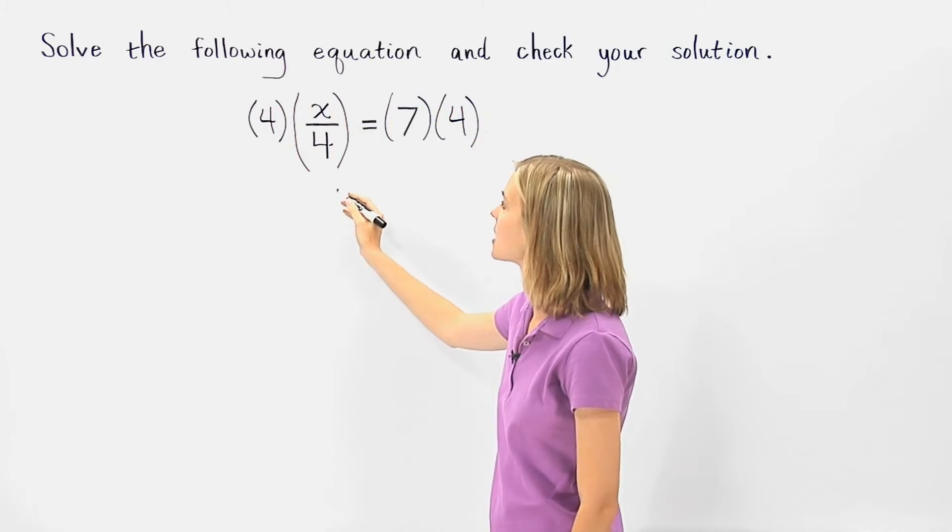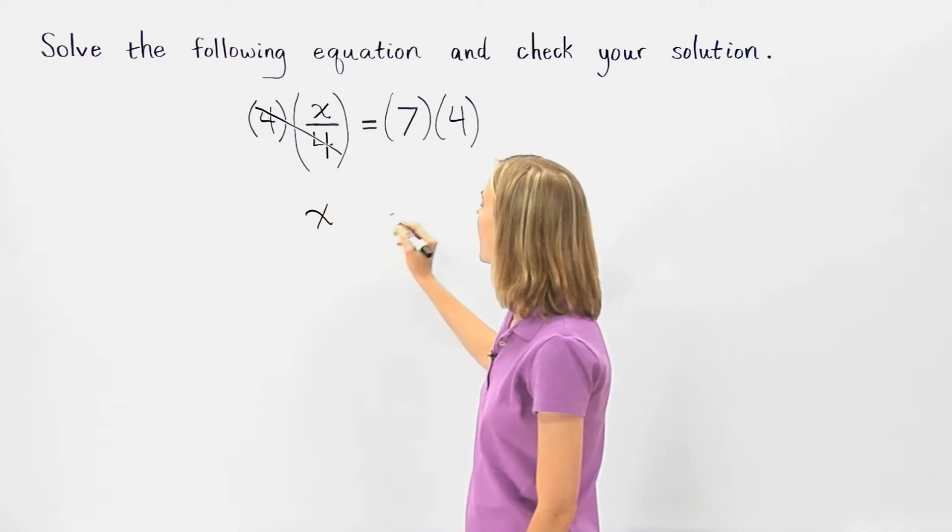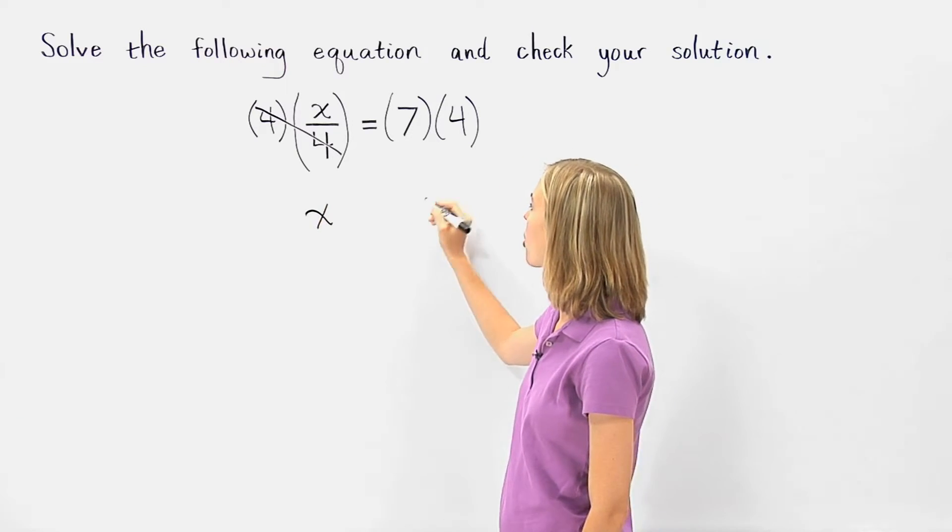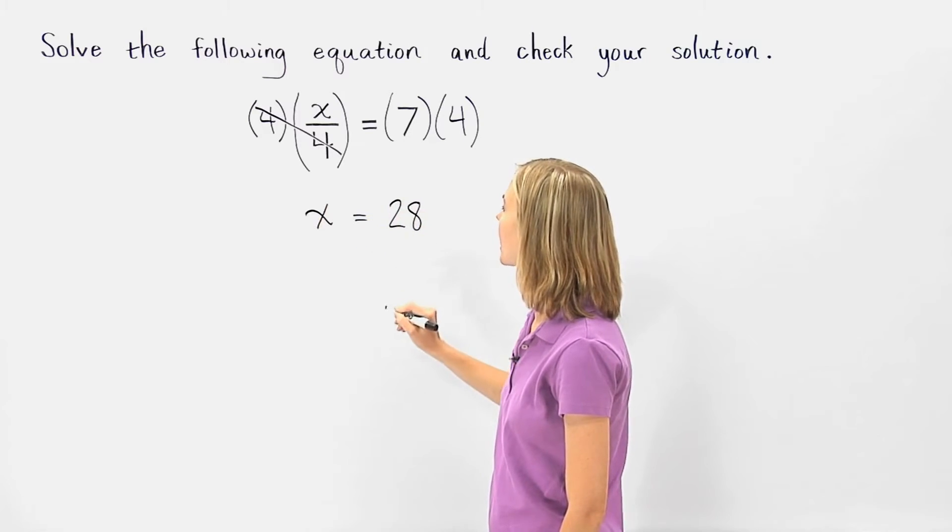On the left side of the equation, the 4's cancel and we have x. And on the right side of the equation, 7 times 4 is 28. So we have x equals 28,